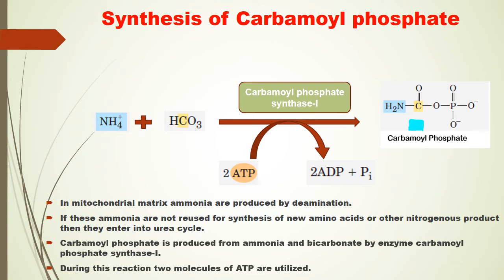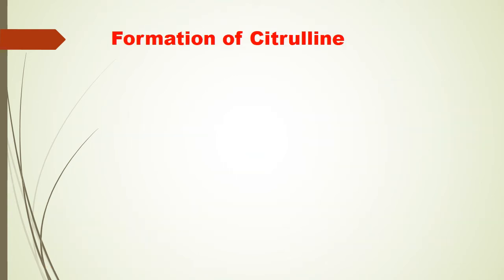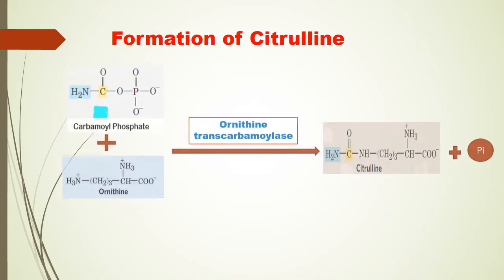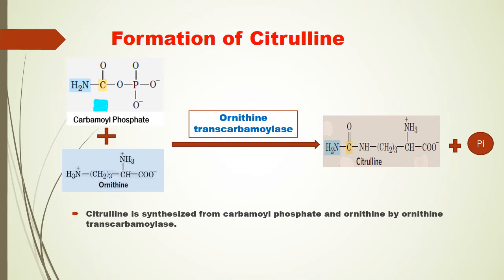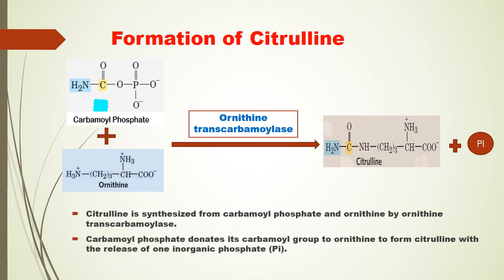Formation of citrulline. Citrulline is synthesized from carbamoyl phosphate and ornithine. This reaction is catalyzed by ornithine transcarbamoylase. Carbamoyl phosphate donates its carbamoyl group to ornithine to produce citrulline with the release of one inorganic phosphate. Then citrulline passes from the mitochondria to the cytosol.